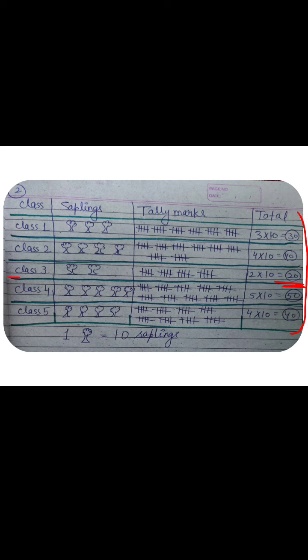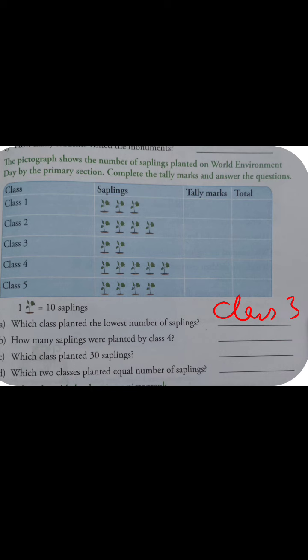The lowest number we can see is 20, and 20 plants — that means 20 saplings were planted by Class 3. So Class 3 planted the fewest saplings.